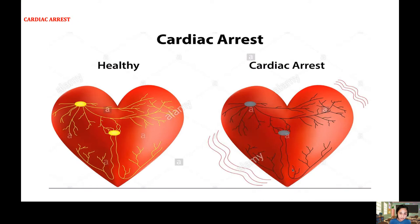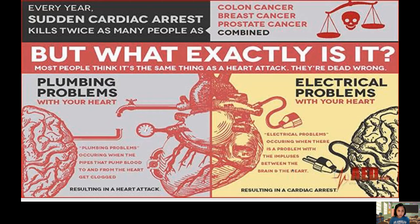A healthy heart is on the left, and a cardiac arrest heart is on the right. During cardiac arrest, there is no electrical activity — the heart needs electricity to pump, but during cardiac arrest, that electricity ceases. There are two causes: plumbing problems, where the pipes that pump blood are clogged due to cholesterol or diabetes, and electrical problems, where the heart's electrical conductivity stops.